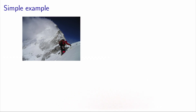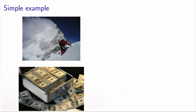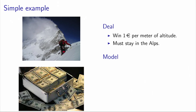Let's consider a simple example where an alpinist meets a billionaire. The billionaire makes this strange proposal: he will give the alpinist one euro per meter of altitude that he is able to reach. But there is one constraint — the alpinist must stay in the Alps.